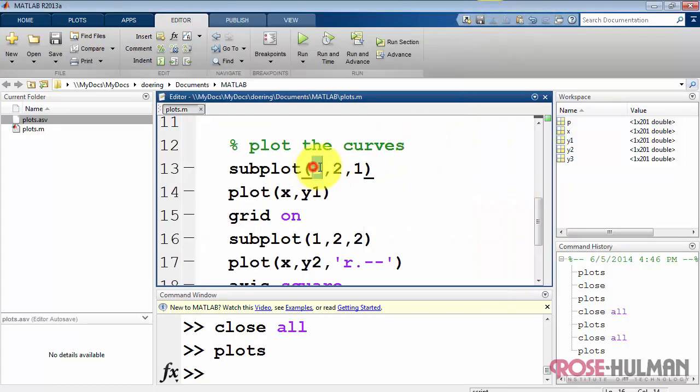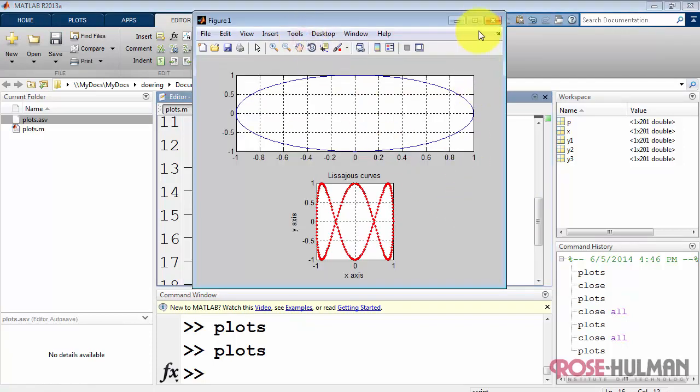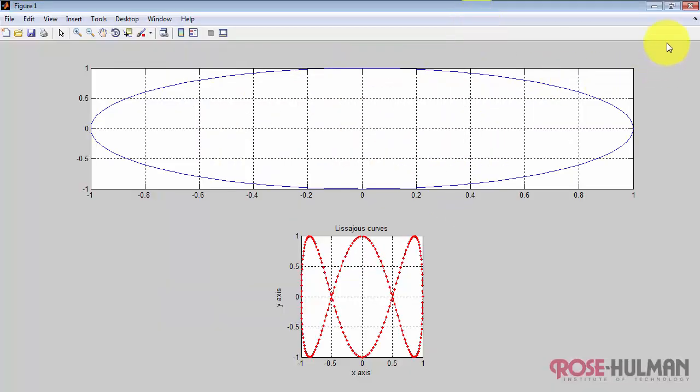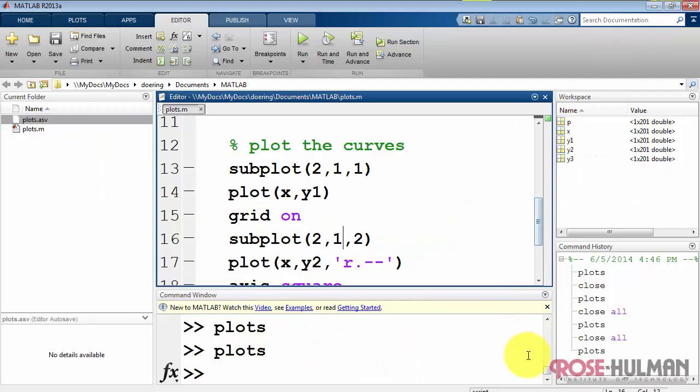I'm going to switch this around so now I have two rows and one column. And there's plot number one on top and plot number two on the bottom.